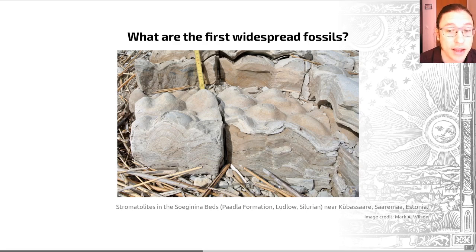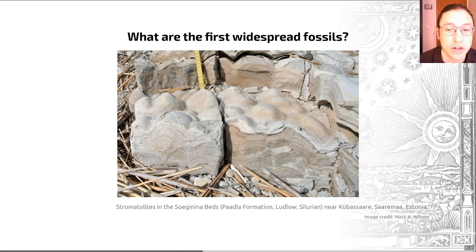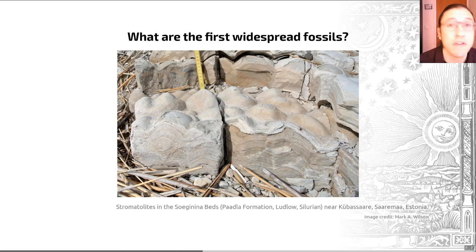Robustly biogenic stromatolites — those that we are fairly confident are biological in origin — appear at about 3.4 billion years ago, and they are common by about 3 billion years ago, suggesting that about 3,000 million years ago in Earth history, we had widespread bacterial colonization of the Earth.